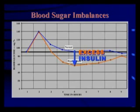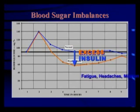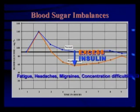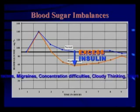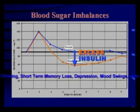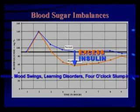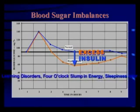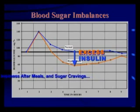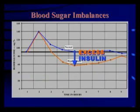When blood sugar drops like that, it robs the brain and the body of energy and you can get a bunch of different symptoms, including fatigue, general tiredness, headaches including migraines, concentration difficulties, cloudy thinking, short-term memory loss. I used to have this a great deal when I was so hypoglycemic. Depression and mood swings — it's not a Prozac deficiency, but sometimes it's this low blood sugar problem. Learning disorders in children — not a Ritalin deficiency, that's just the way they treat it. A 4 o'clock slump in energy, sleeping after meals, and sugar cravings are all very common symptoms when your blood sugar is falling down too fast or too far.